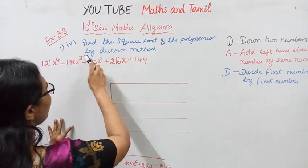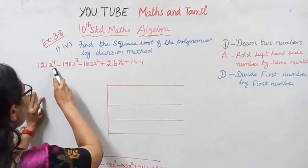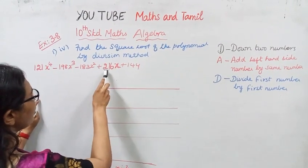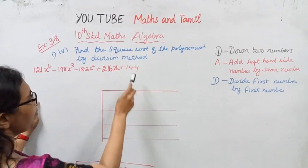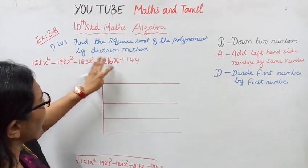Find the square root of the polynomial by division method. The problem is 121x⁴ - 198x³ - 183x² + 216x + 144. Square root of the polynomial by division method.